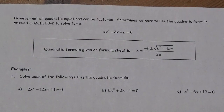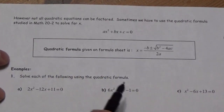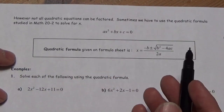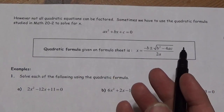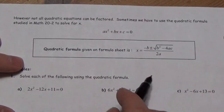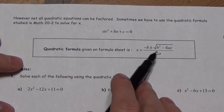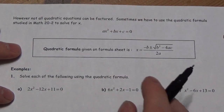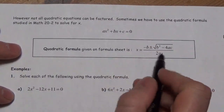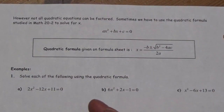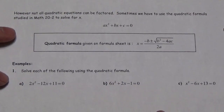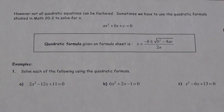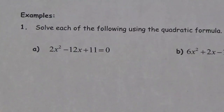Not every quadratic equation can be factored, but when it can't be factored you're still not stuck because we've got the quadratic formula. That formula gives us numbers with square roots in them — numbers you wouldn't normally guess when trying to factor. They're not obvious, but you can still get them just by following the formula. Let's take a look at a handful of problems where we do that.